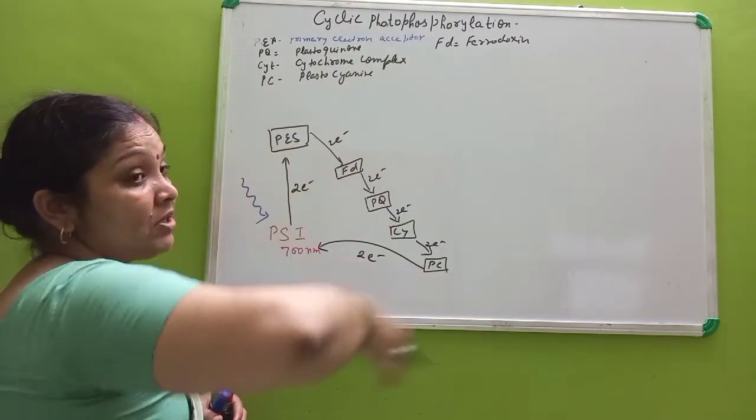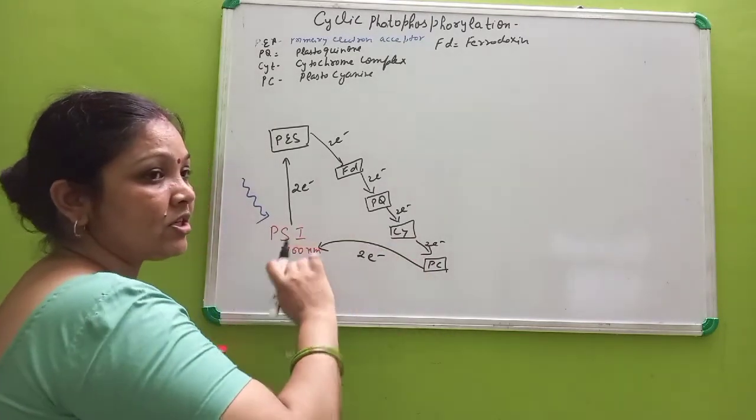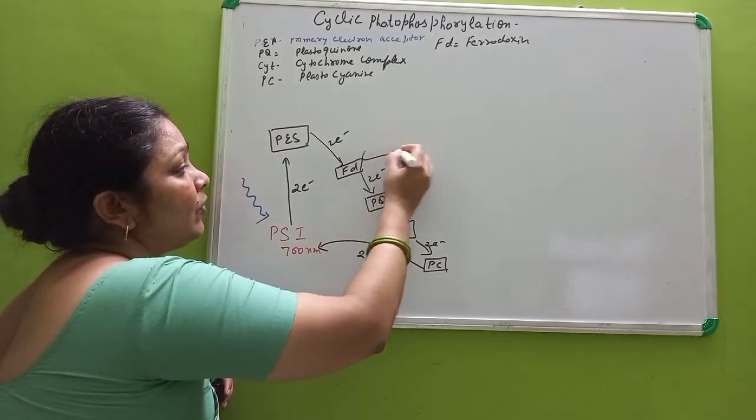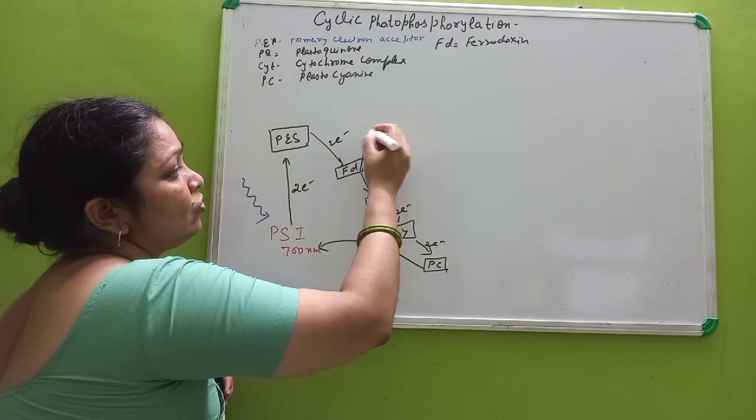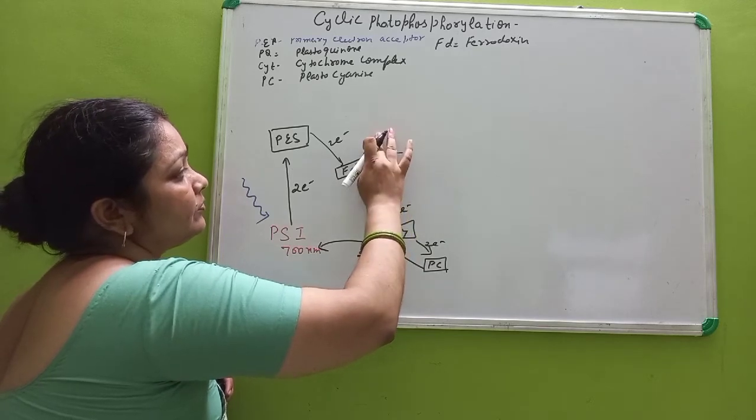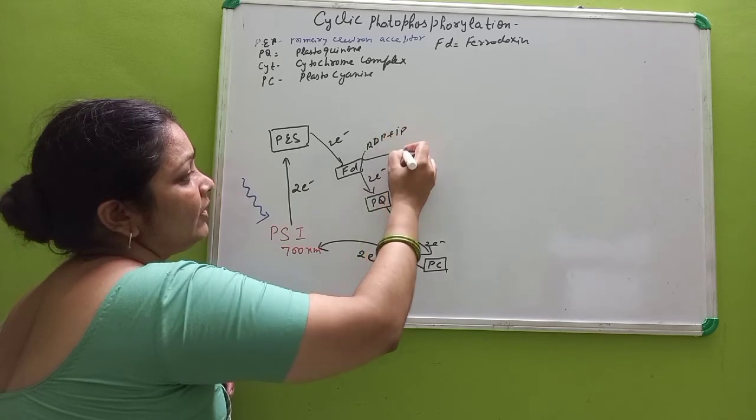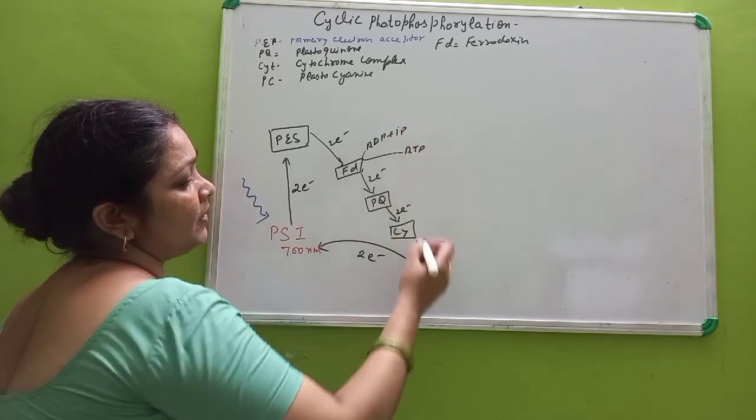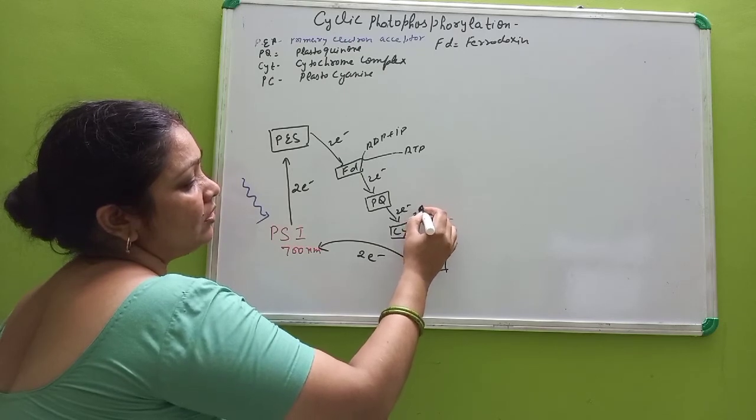Now two things here also will take place, that is photophosphorylation. Phosphorylation is occurring in two places. One is where FAD is there. When electron is accepted by FAD, ADP combines with inorganic phosphate and forms ATP.